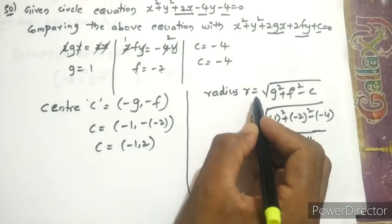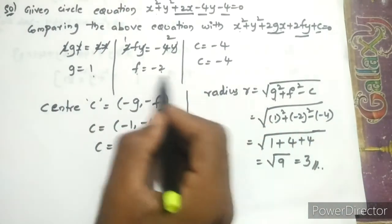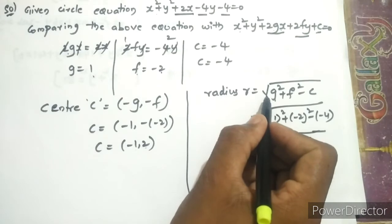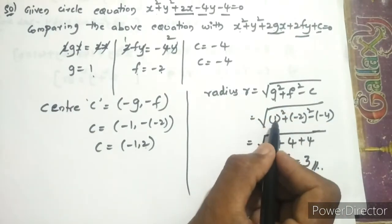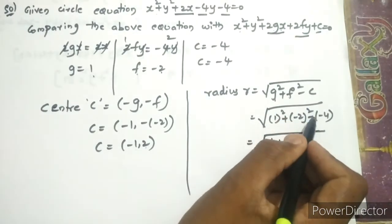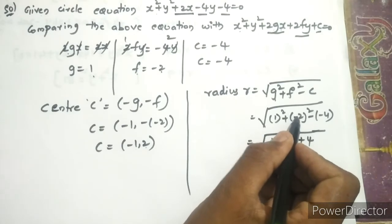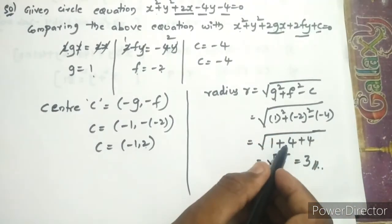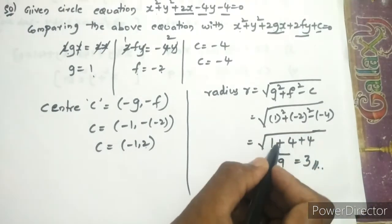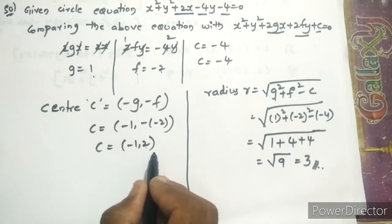The radius r = √(g² + f² - c). Substituting: g = 1, f = -2, c = -4. So r = √(1² + (-2)² - (-4)) = √(1 + 4 + 4) = √9 = 3.